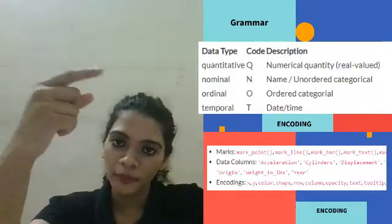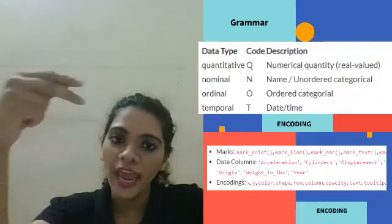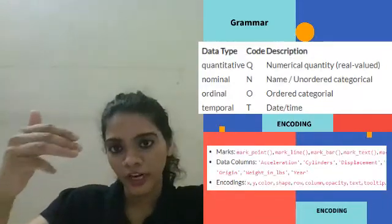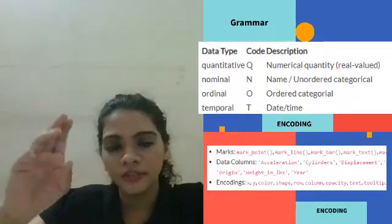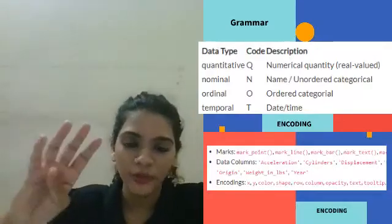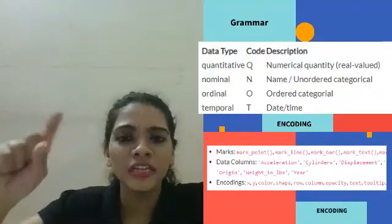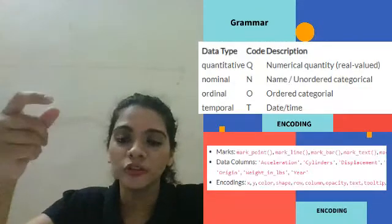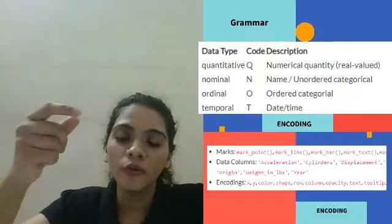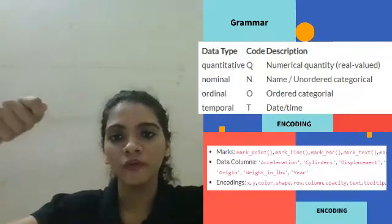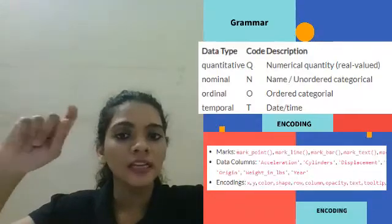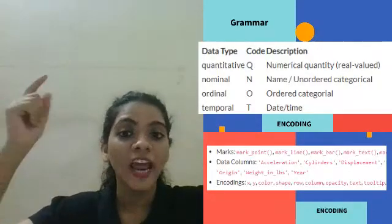Remember from the above image that you've got Q-N-O-T, which represents various data types that Altair uses: quantitative, nominal, temporal, or ordinal data. You're working with different data sets and different types of data in Python, so you have to represent each type differently to convey more meaning.